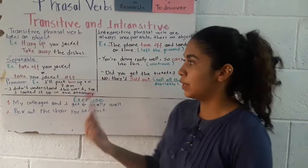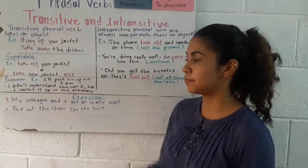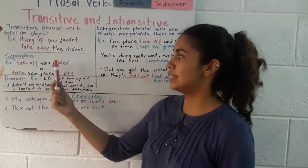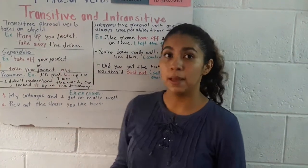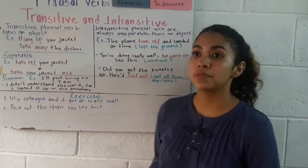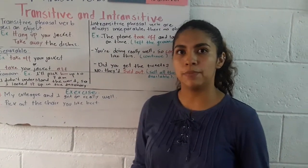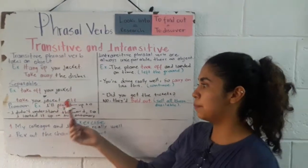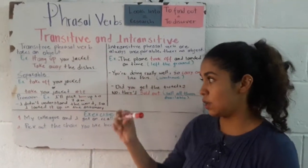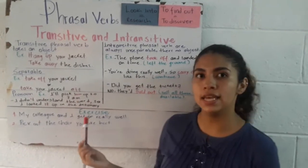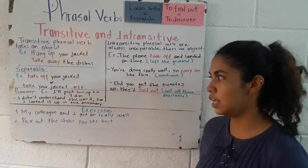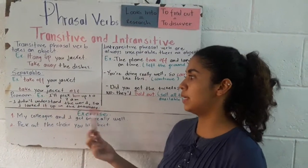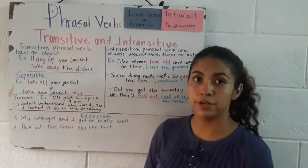We can also say 'Take your jacket off.' In this case, jacket is the object and goes in the middle of the sentence. But if there are pronouns, we always put the pronoun in the middle of the sentence. For example, 'I'll pick him up.' Him is the pronoun. Another example: 'I didn't understand the word, so I looked it up in the dictionary.' It is the pronoun.